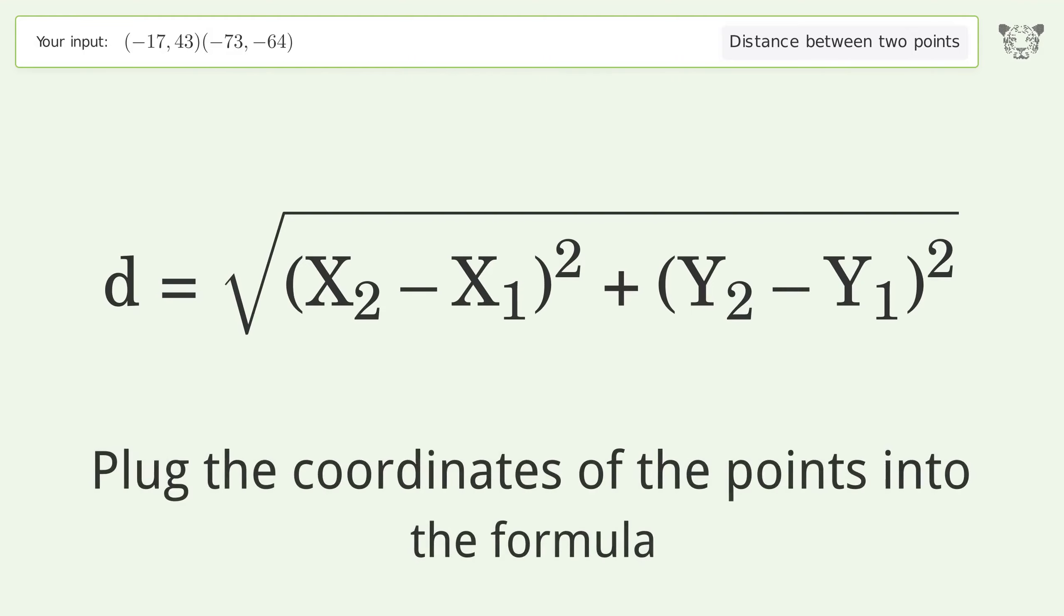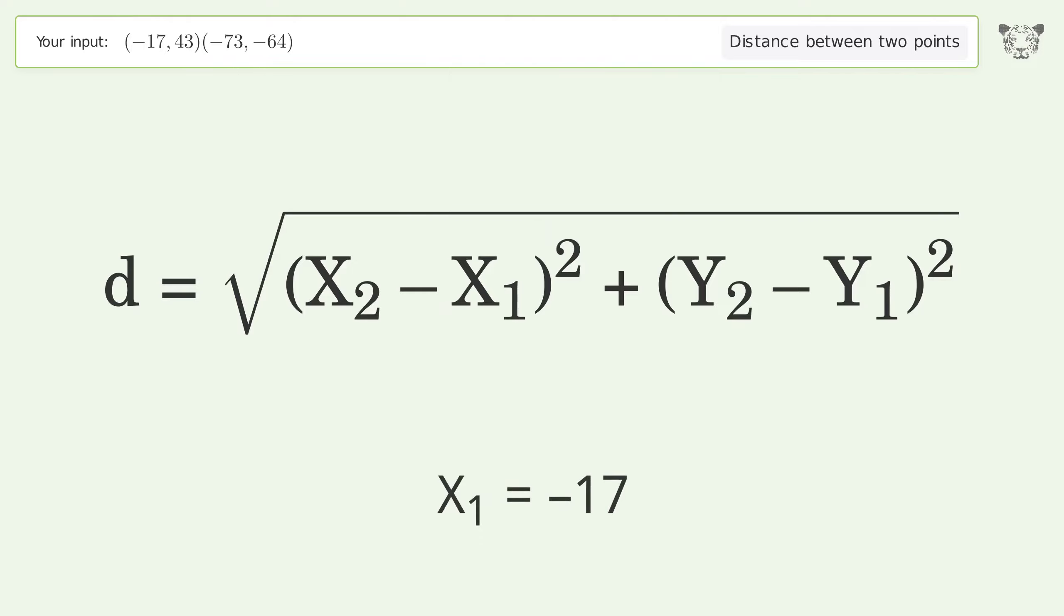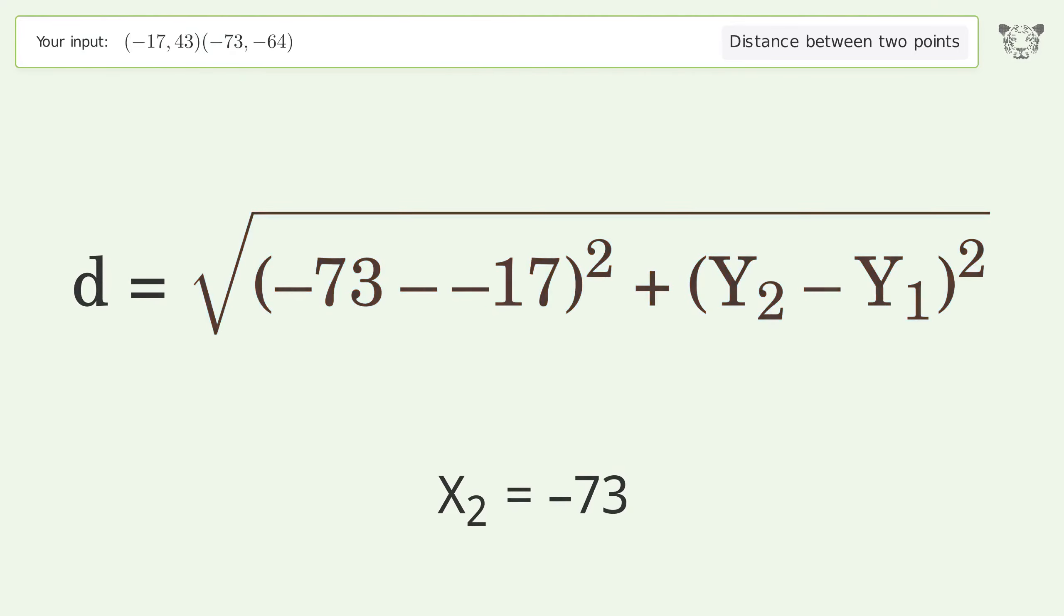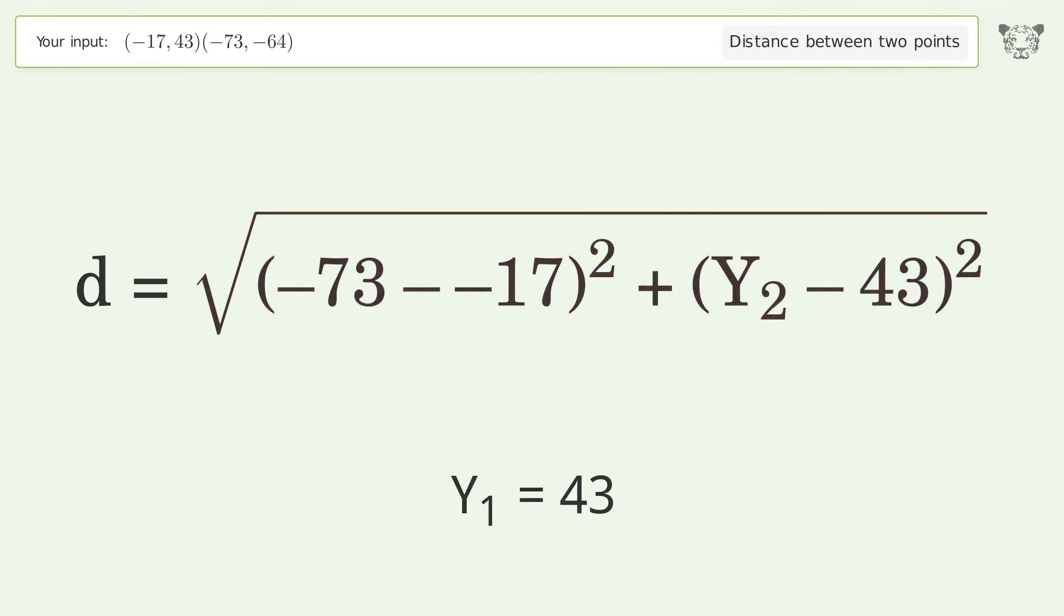Plug the coordinates of the points into the formula. x1 equals negative 17, x2 equals negative 73, y1 equals 43, y2 equals negative 64.